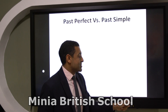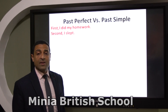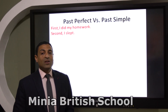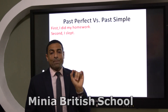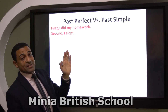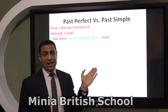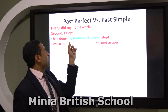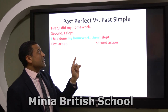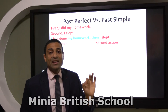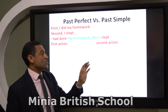Look at these examples — two actions: first, 'I did my homework'; second, 'I slept.' We have two actions in the past. Which happened first? Clearly, doing the homework came first. When we talk about two past actions and one happened before the other, we use past perfect for the first action and past simple for the second: 'I had done my homework, then I slept.'